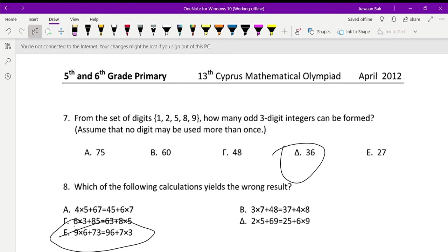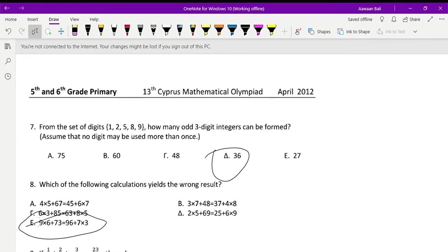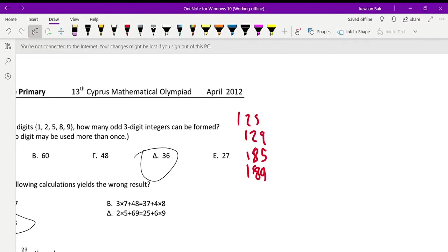Question number 7. From the set of digits 1, 2, 5, 8, and 9, how many odd 3-digit integers can be formed? Assume that no digit may be used more than once. Well, there's a lot of possibilities for this, but to find this easily, you just have to look at the first odd 3-digit integers. So we can start with 1. We have 1, 2, 5; 1, 2, 9; 1, 8, 5; 1, 8, 9. So that's all of the ones for 1 already. There's actually one more: 1, 5, 9 or 1, 9, 5. So that would be 1, 2, 3, 4, 5, 6.